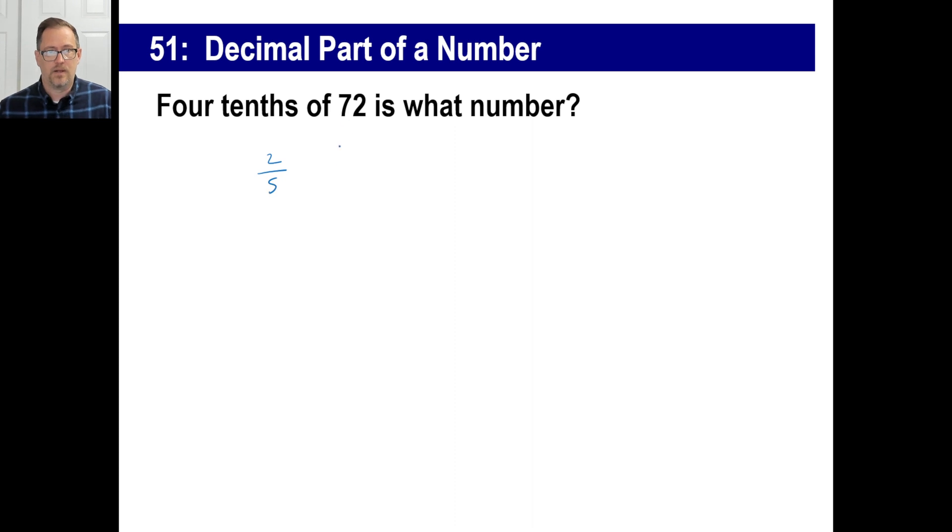Of 72 times 72 over 1 is equals what number? A. I'm going to rebel today. Alright. A is equal to 2 times 72 is 144.